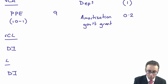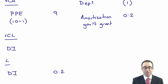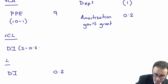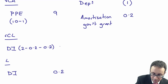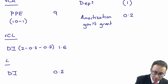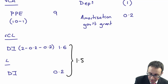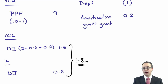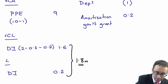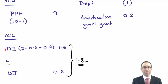The deferred income remaining to be released over the remaining nine years is $1.8 million. Of that, $0.2 million is a current liability (due next year) and the remainder of $1.6 million is non-current. The deferred income non-current balance can be considered a balancing figure.